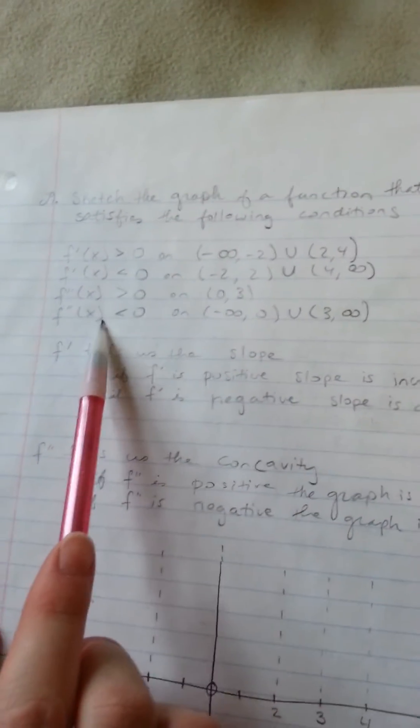Okay, so the question we have is to sketch the graph of a function that satisfies the following conditions. And these are the conditions that are given to you in the problem.